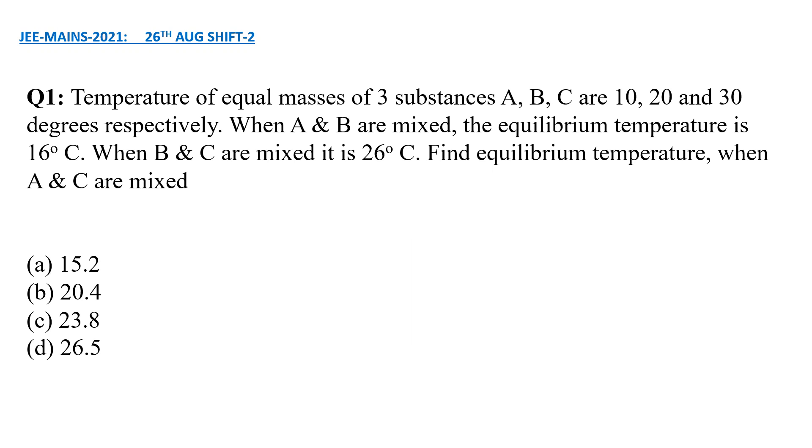In this question, you are given three substances of equal masses and their temperatures are also given. The three substances are A, B, C. They have masses M each. Let their specific heat capacities be S1, S2, S3. Their initial temperatures are 10, 20, and 30. And when two of them are mixed, temperatures are given.